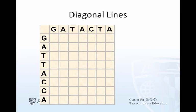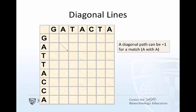First, we'll look at how diagonal lines score. A diagonal path can be a plus one. You see the arrow is a match because it's an A to an A. Or minus one for a mismatch. That arrow is in the A to T region.